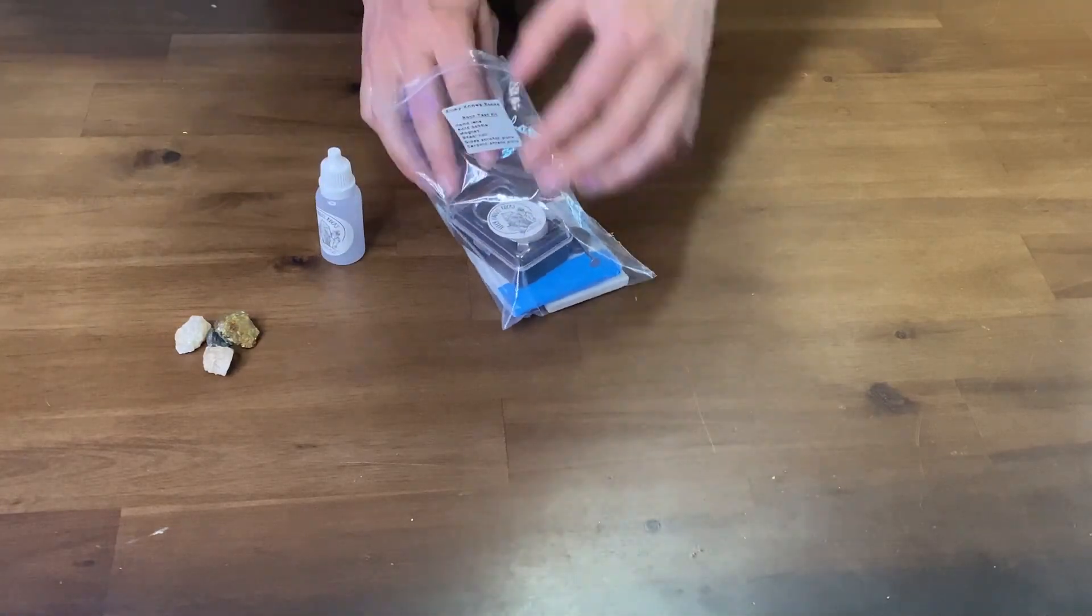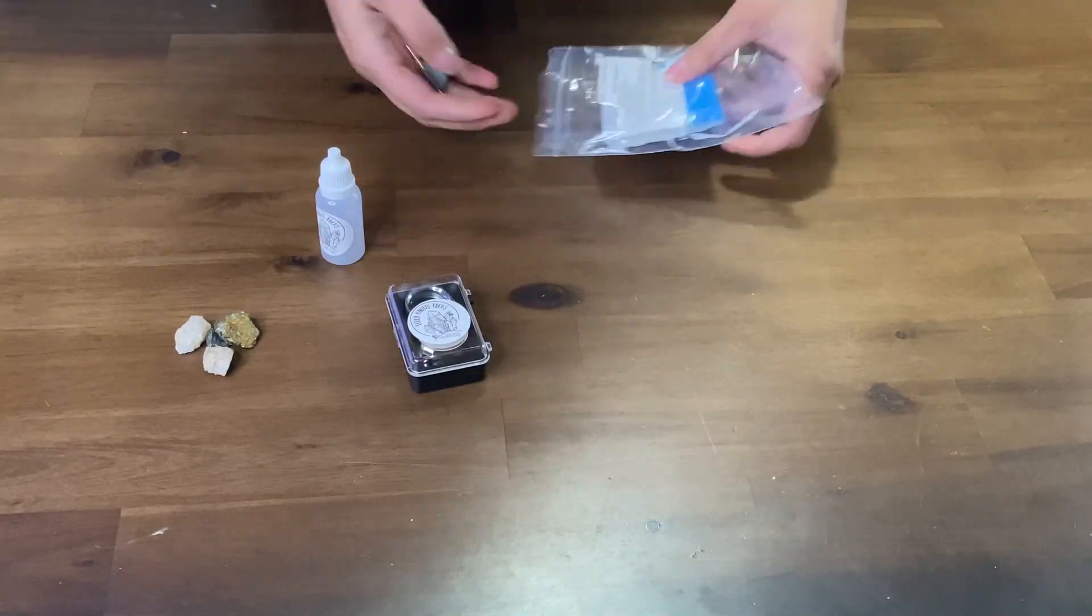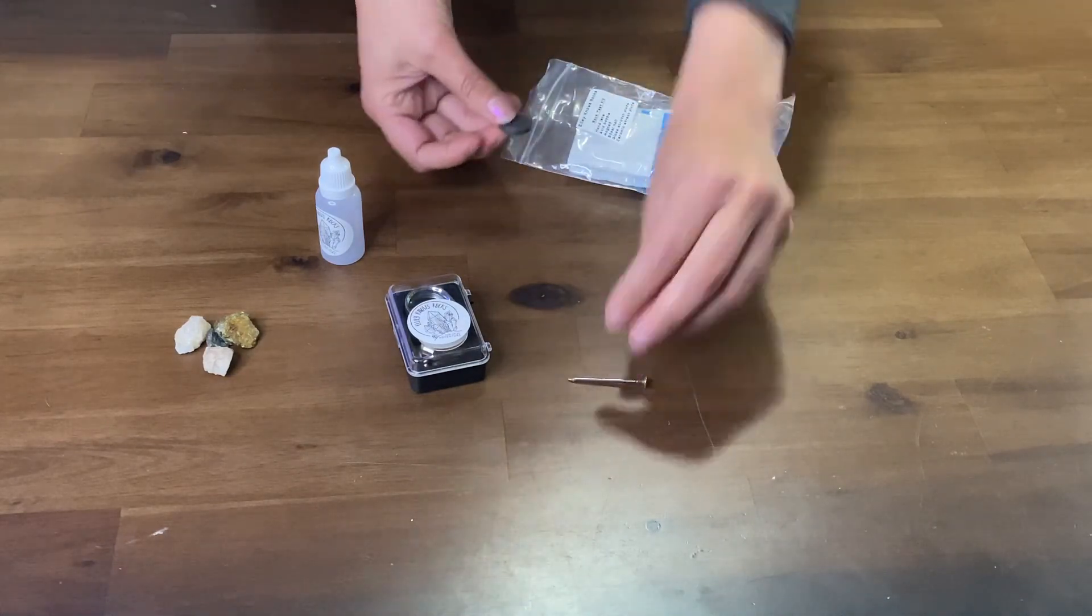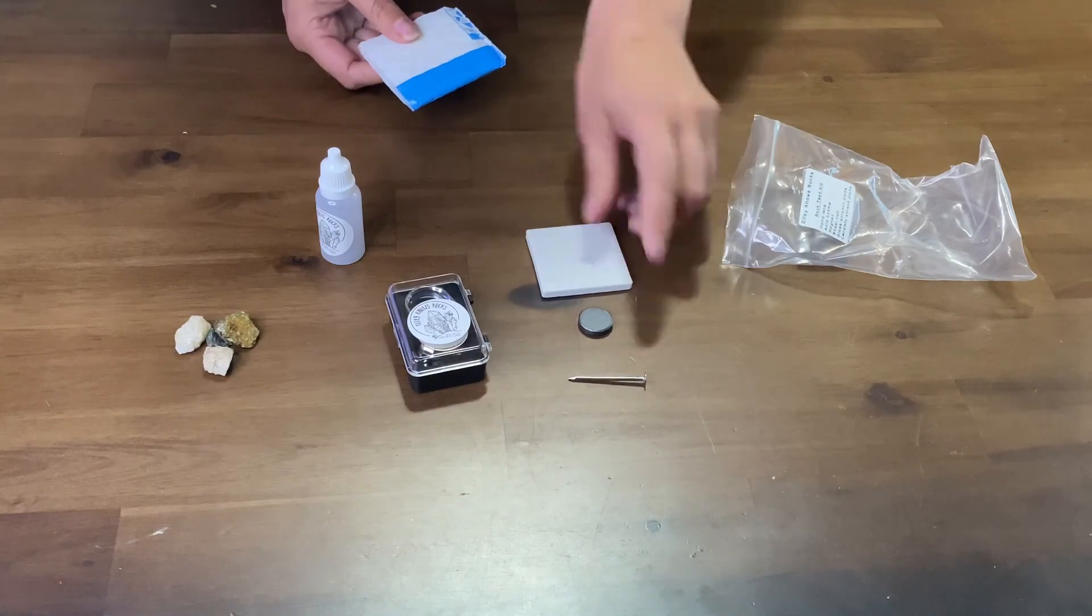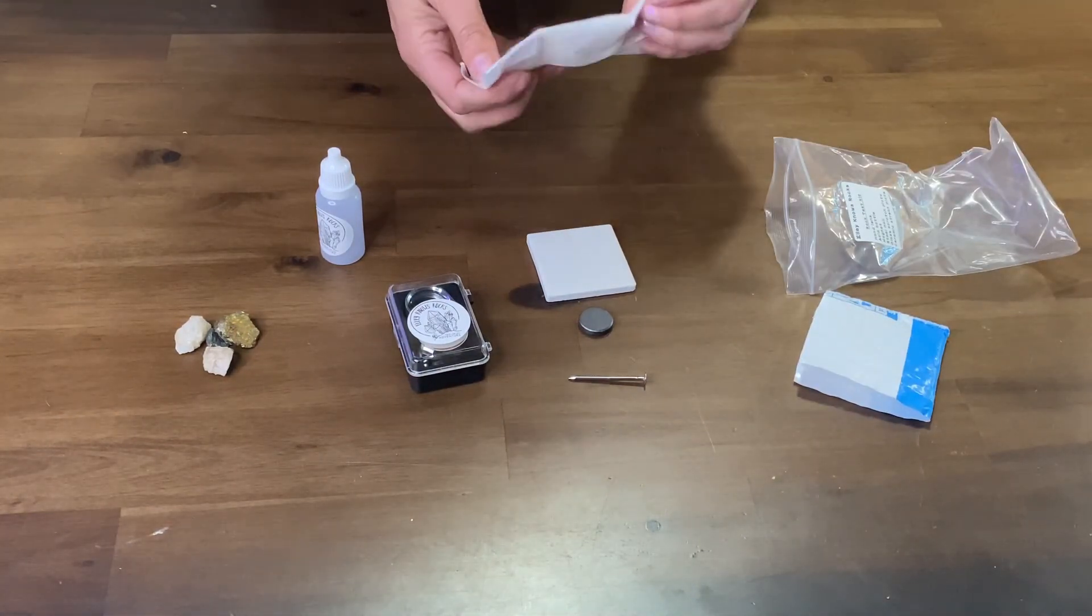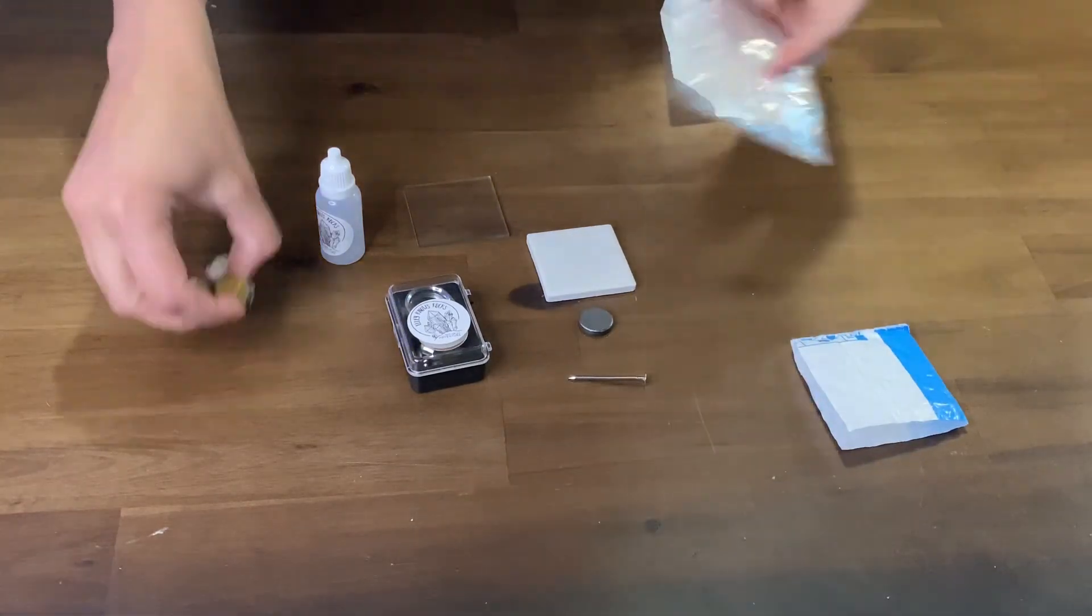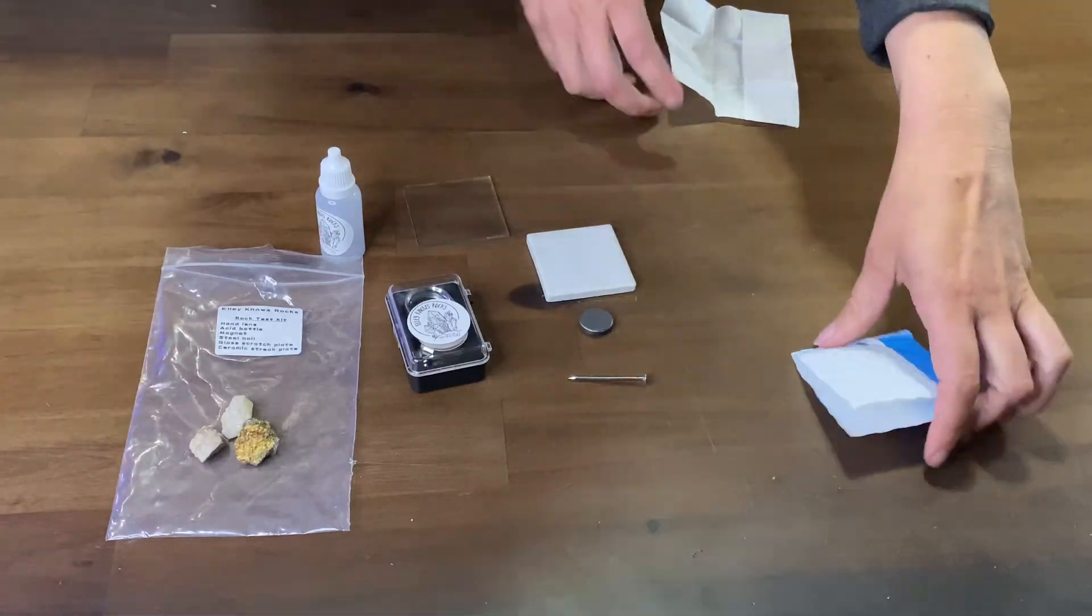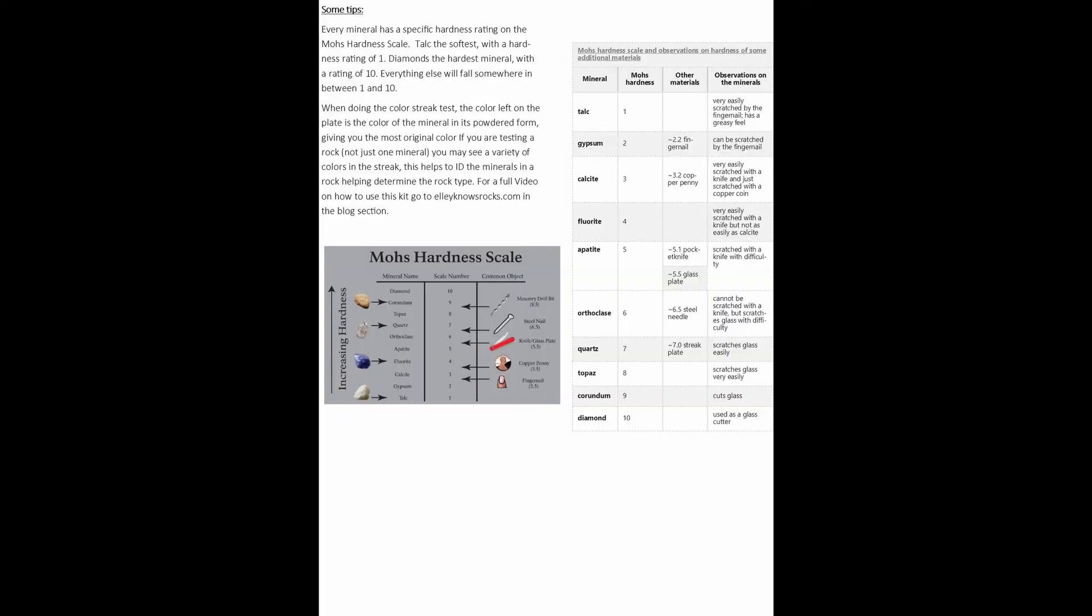An acid bottle, a hand lens, a steel nail, a magnet, a ceramic streak plate, a glass scratch plate, and the baggie you can use to put all of the stuff back in or just store your minerals in it. The mineral kit also comes with step-by-step instructions including a few tips and a reference to Mohs hardness scale.